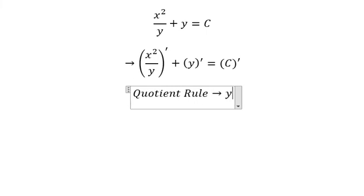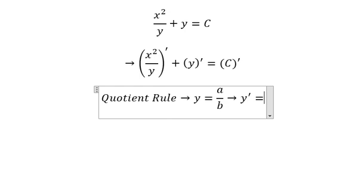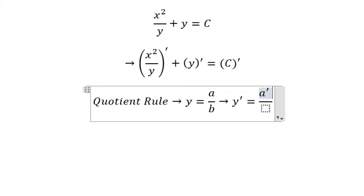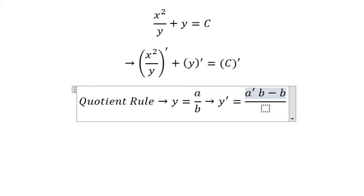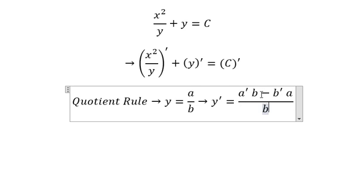So we have y equals a over b. If we take the derivative of this one, we need to do the derivative of a multiplied by b minus the derivative of b multiplied by a over b squared.